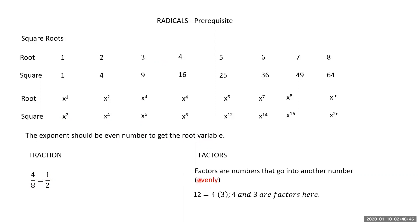To simplify radical expressions, we need to find factors of the radicand. For example, 12 is equal to 4 into 3, so 4 and 3 are factors of 12.